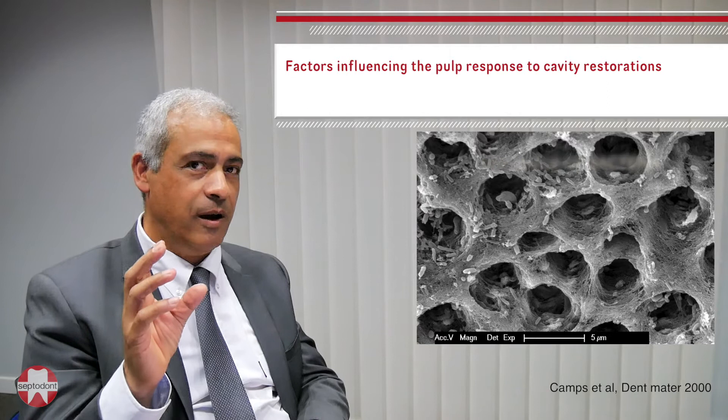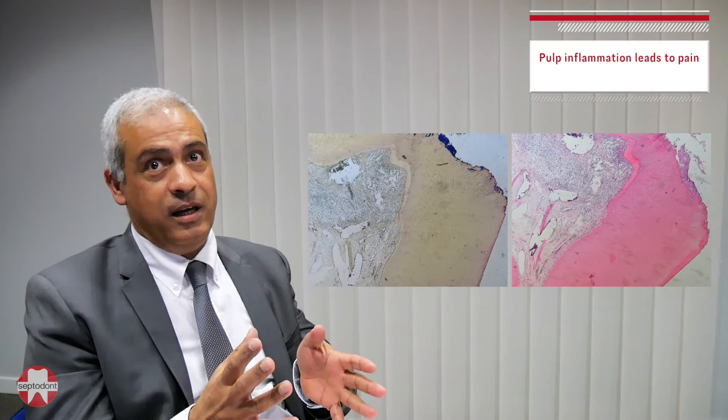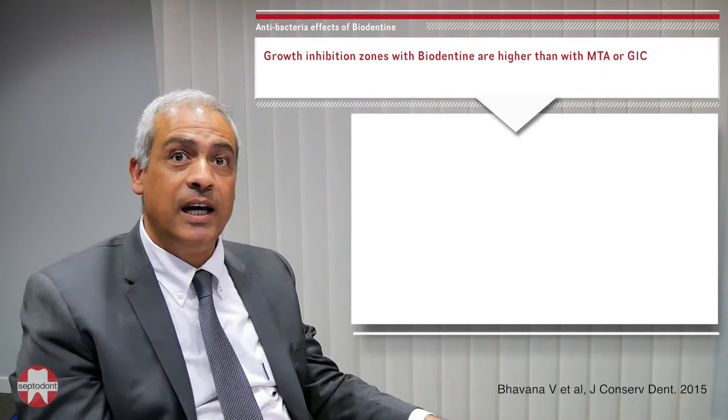If you do not eliminate bacteria, you will get inflammation, and with inflammation you will get pain — this is why patients will come to complain in your practice. The choice of material is very important because it should not allow bacteria to penetrate into the pulp. Biodentine has been evaluated on different bacterial species and shown to have a bacterial growth inhibitory effect.